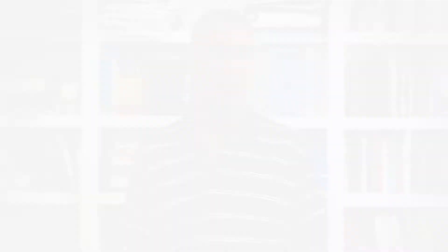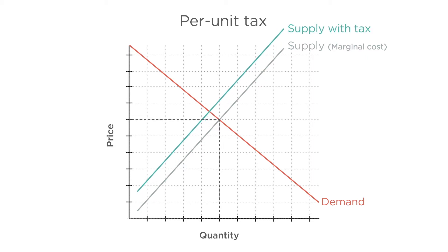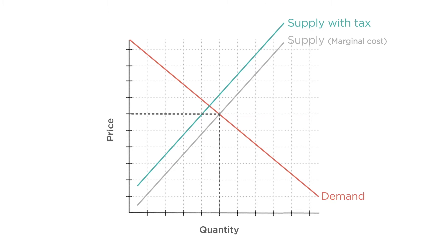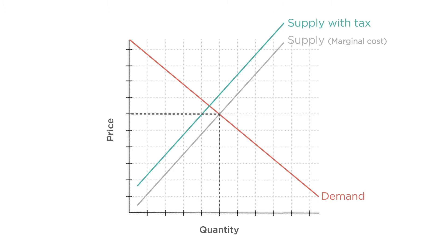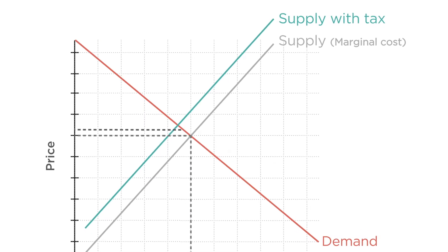So what happens if the government imposes a per-unit tax on firms in this market? Let's start by reviewing what happens with such a tax in a perfectly competitive market. We modeled the per-unit tax as something that shifts the supply curve up by the amount of the tax, since a tax the producer must pay the government for each unit sold increases the marginal cost of each unit by exactly the amount of the tax. The tax burden will be split between the consumer and producer — a per-unit tax generally means the consumer pays a bit more and producers get a bit less.